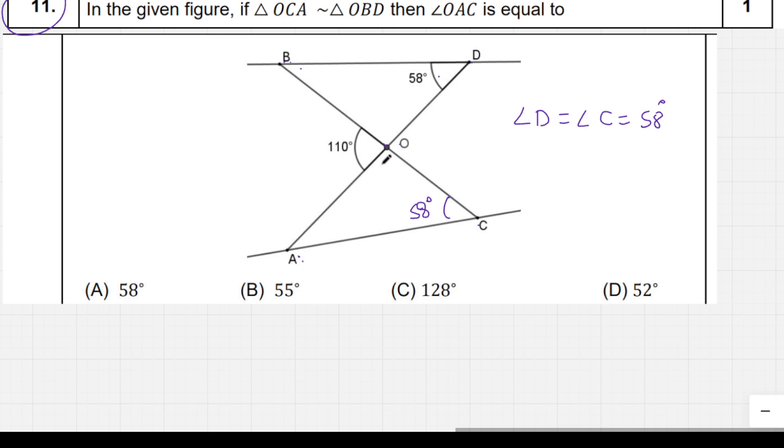Now we can find this angle here because this is a linear pair of angles. For a linear pair, we know the whole angle is equal to 180 degrees.